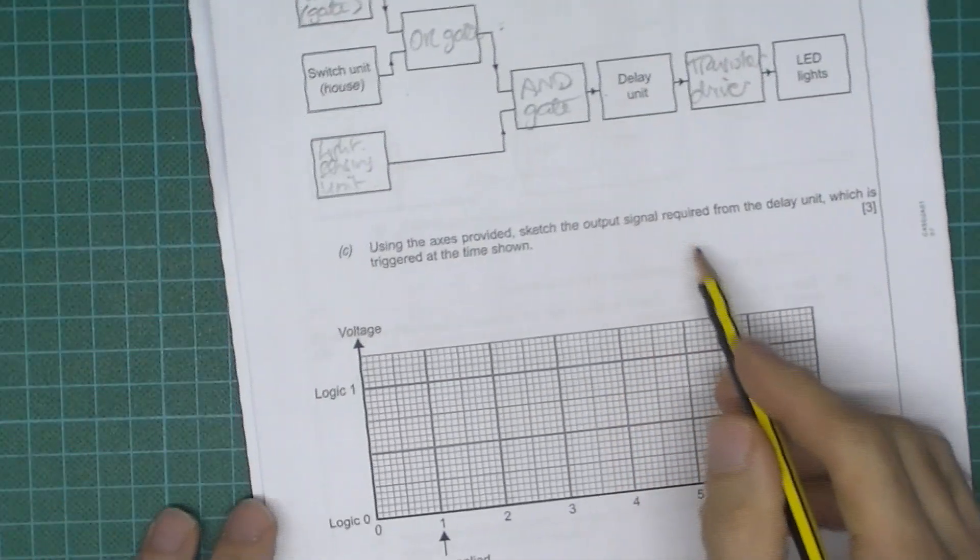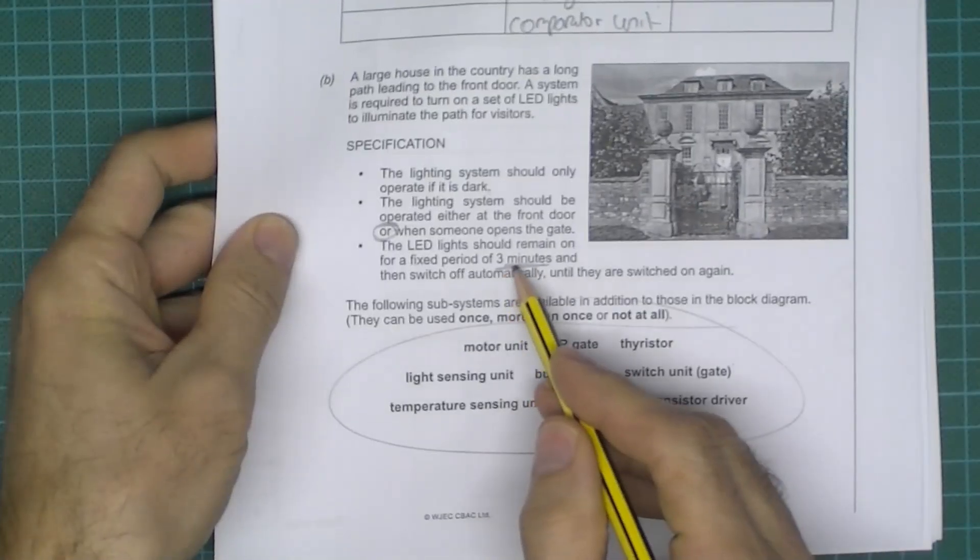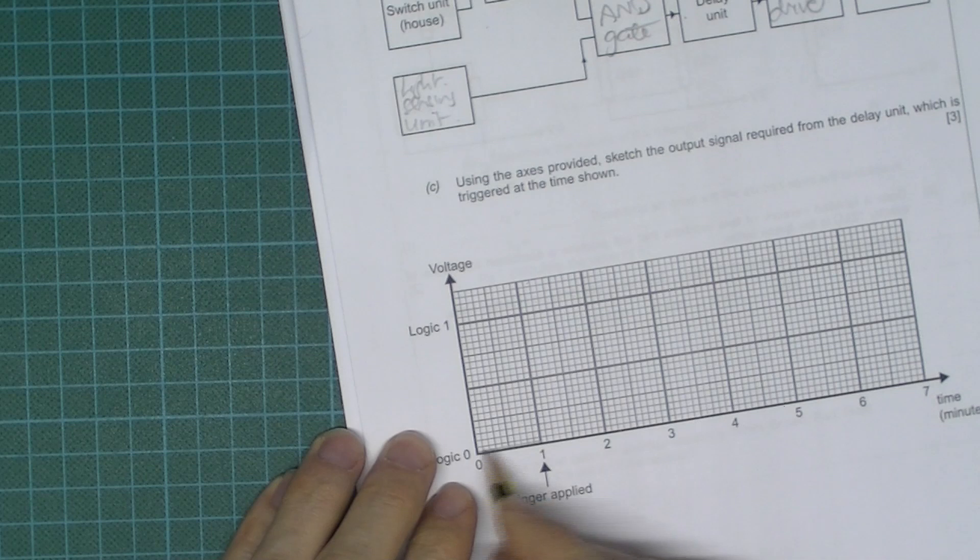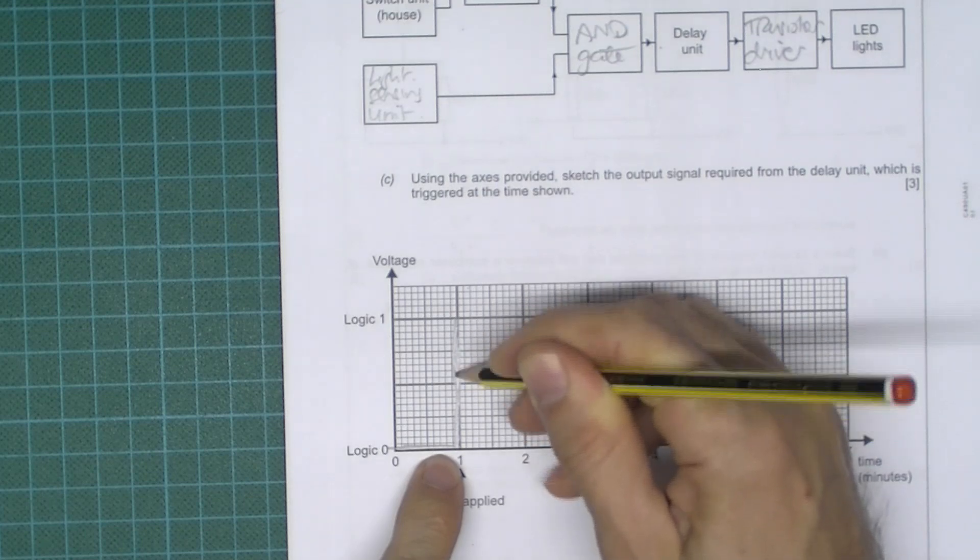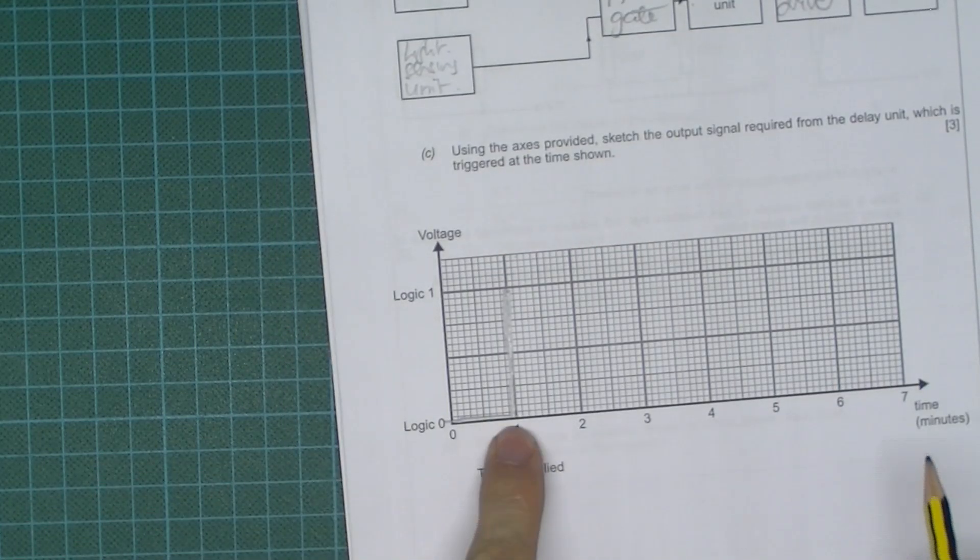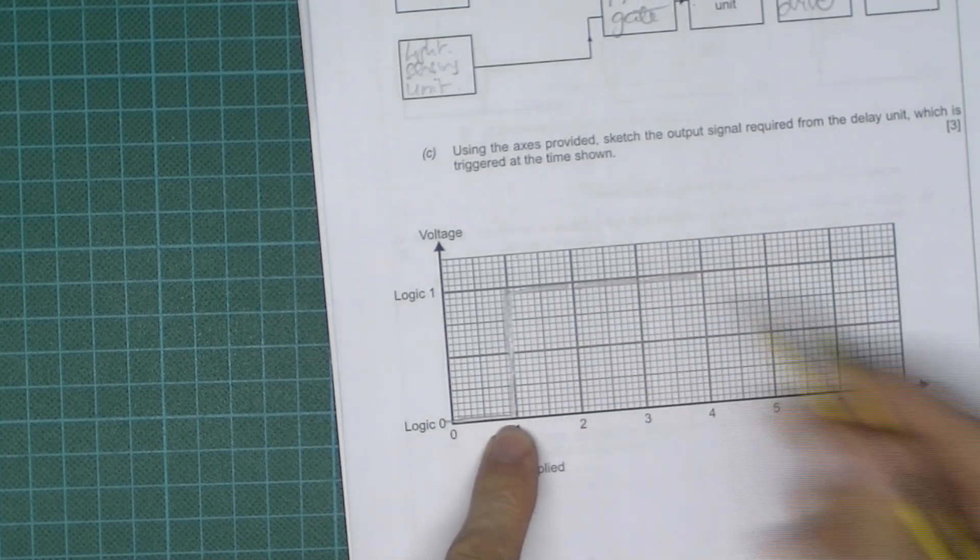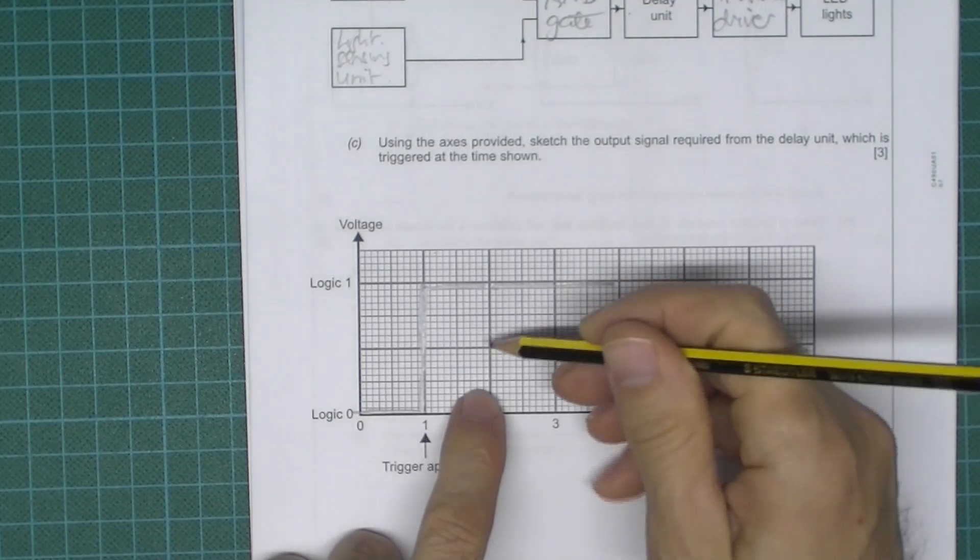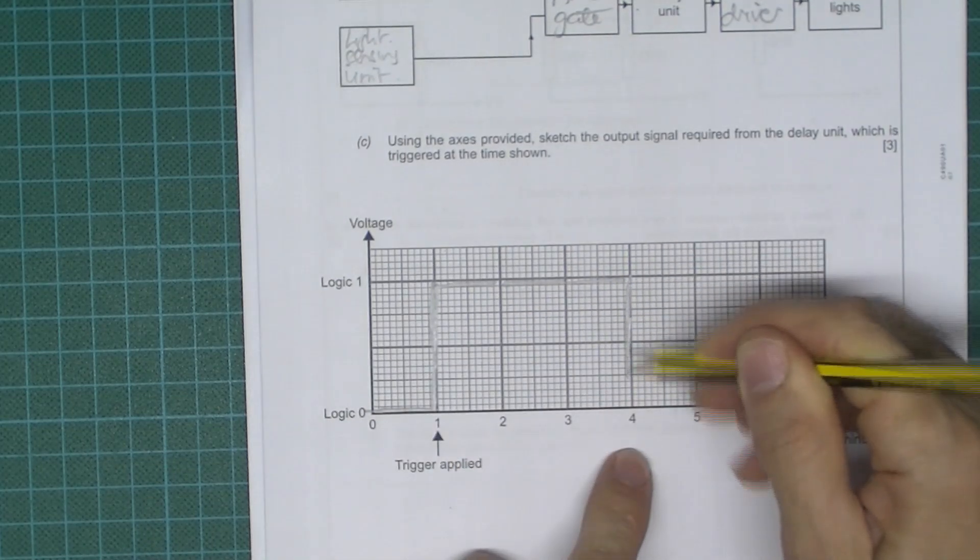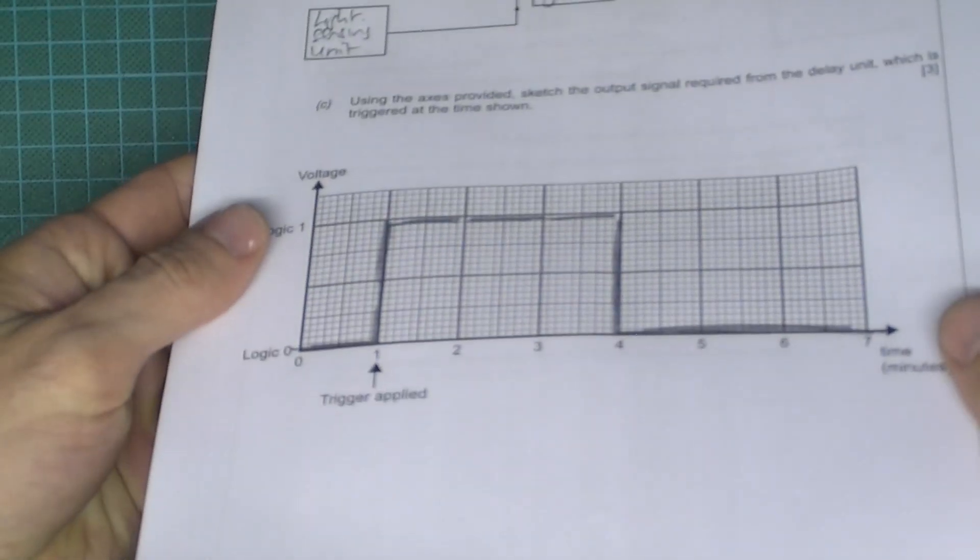Now using the axes provided, sketch the output signal required from the delay unit which is triggered at the time shown. Now if you remember, I think they said it's going to be triggered on, remain on for a fixed period of three minutes and then go off. So as soon as the trigger, so it's off, okay, as soon as it's triggered, okay, it's going to be on for a period of three minutes. So we start here, so we're on for one minute, two minutes, three minutes. By the way, I'm just doing it thick here so you can see because I think the reflection, I've got lights directly above me, makes it difficult for you to see I think. So one, two, three minutes and then goes off and stays off, okay, you can see that hopefully you can.